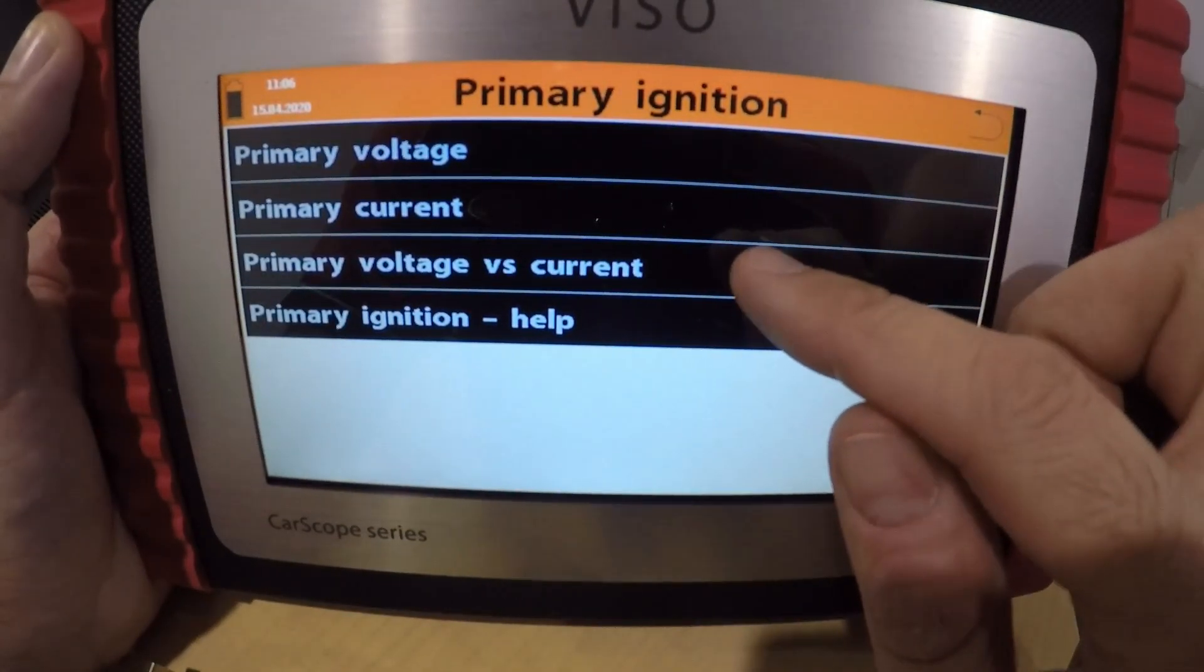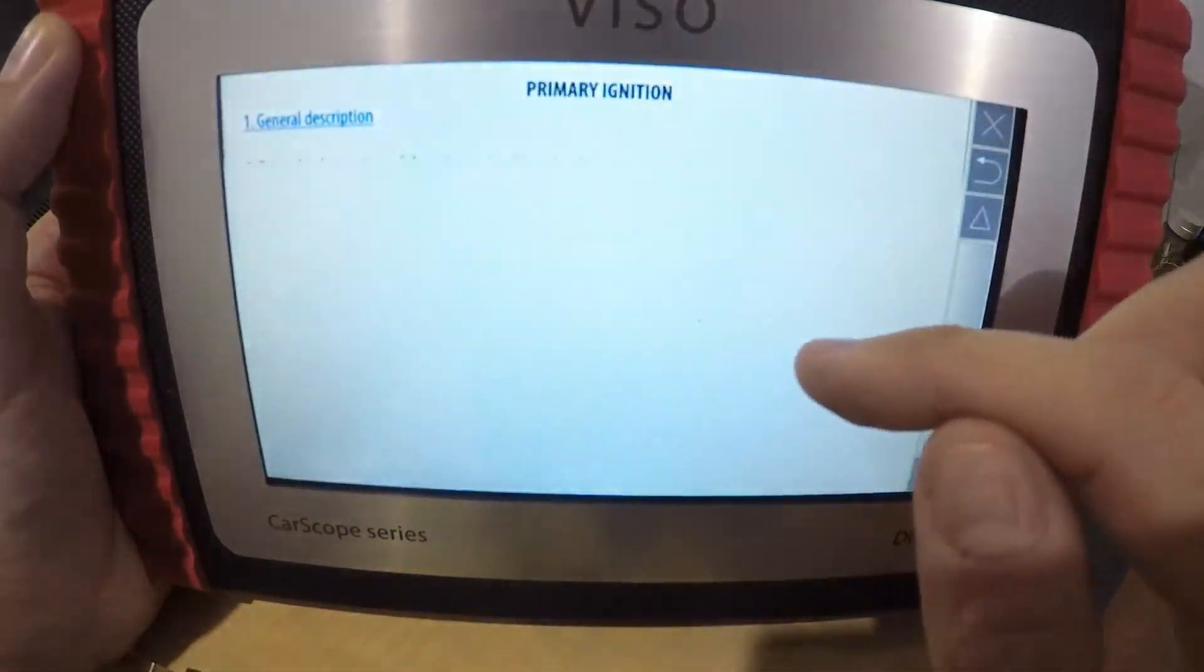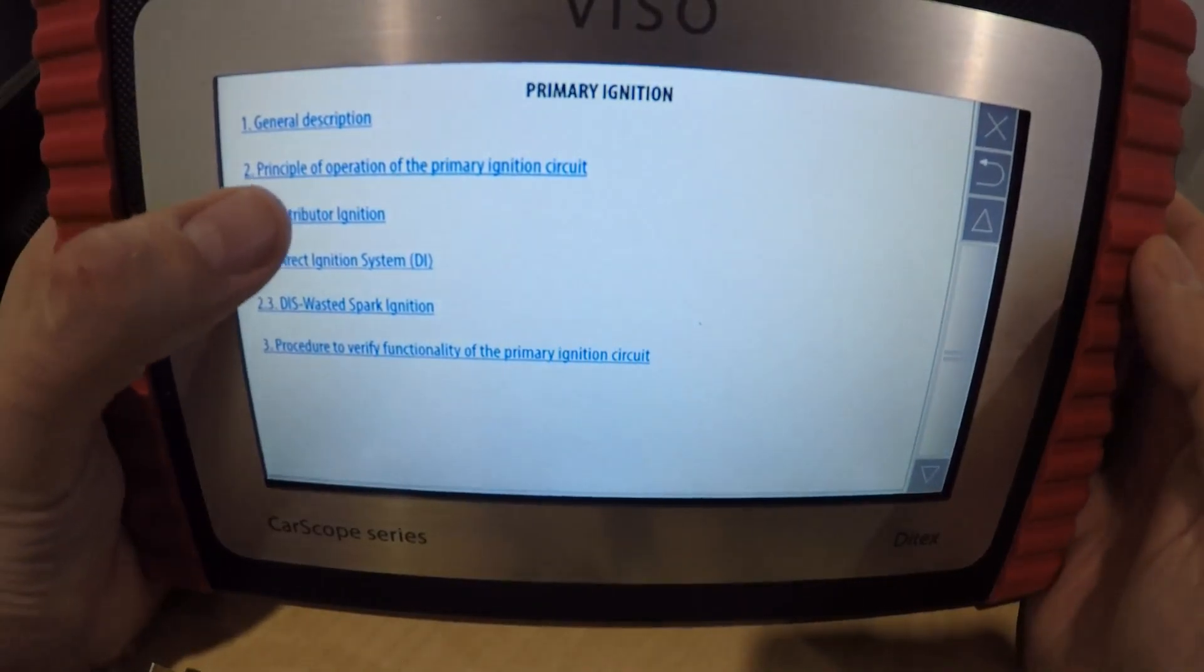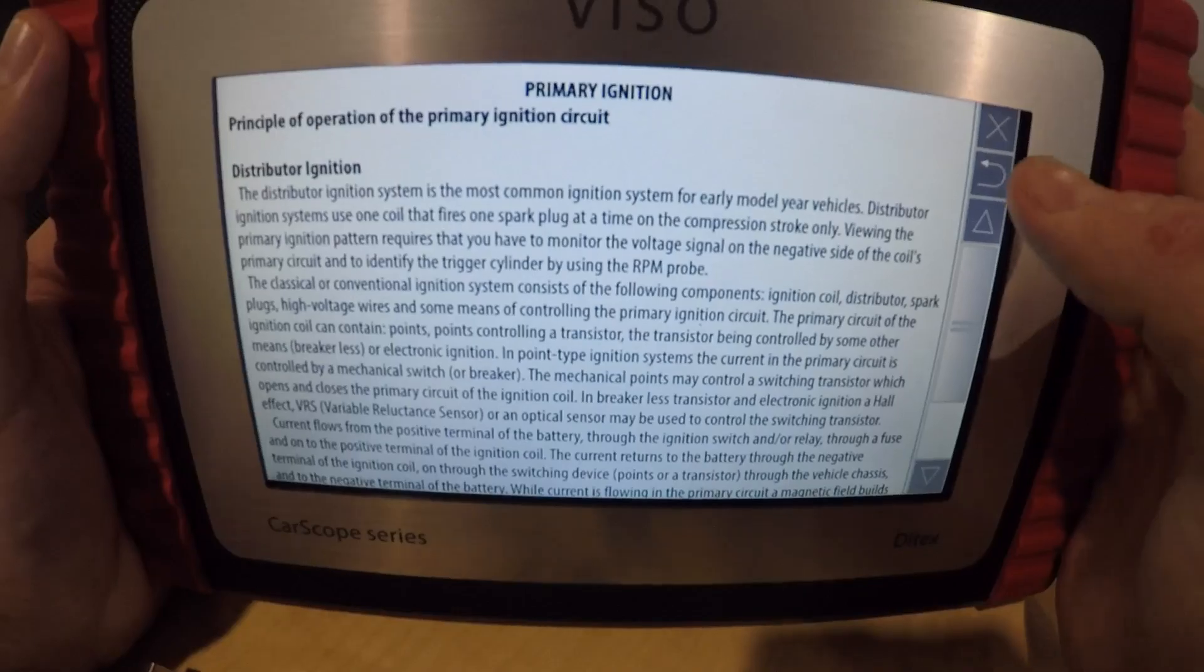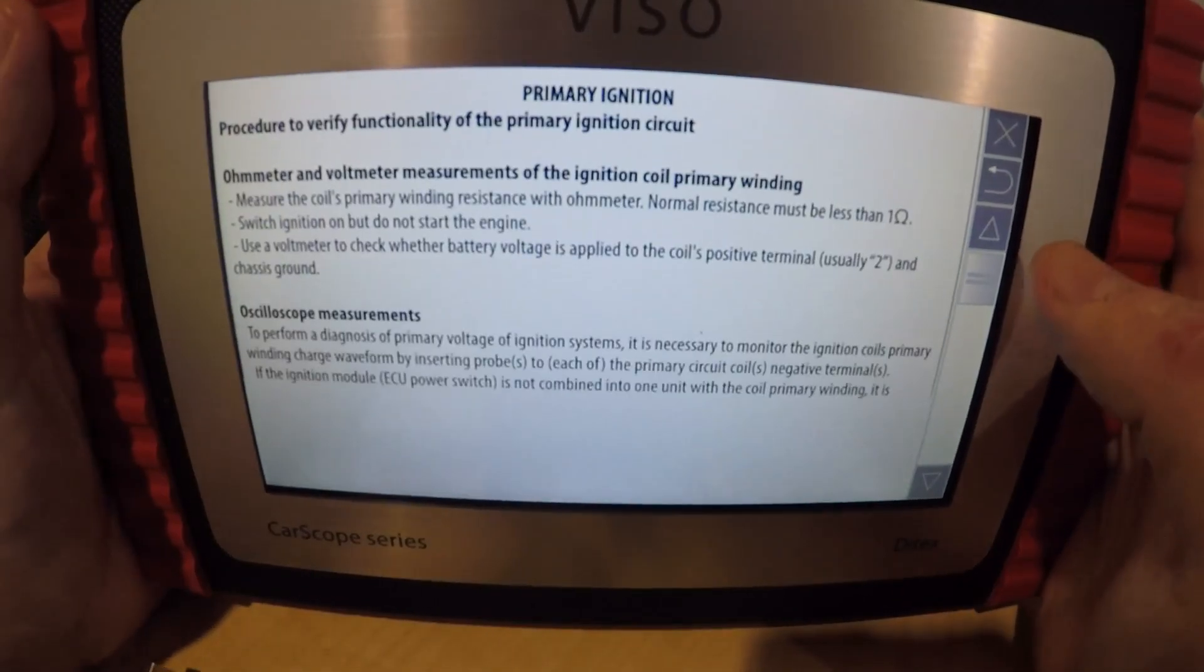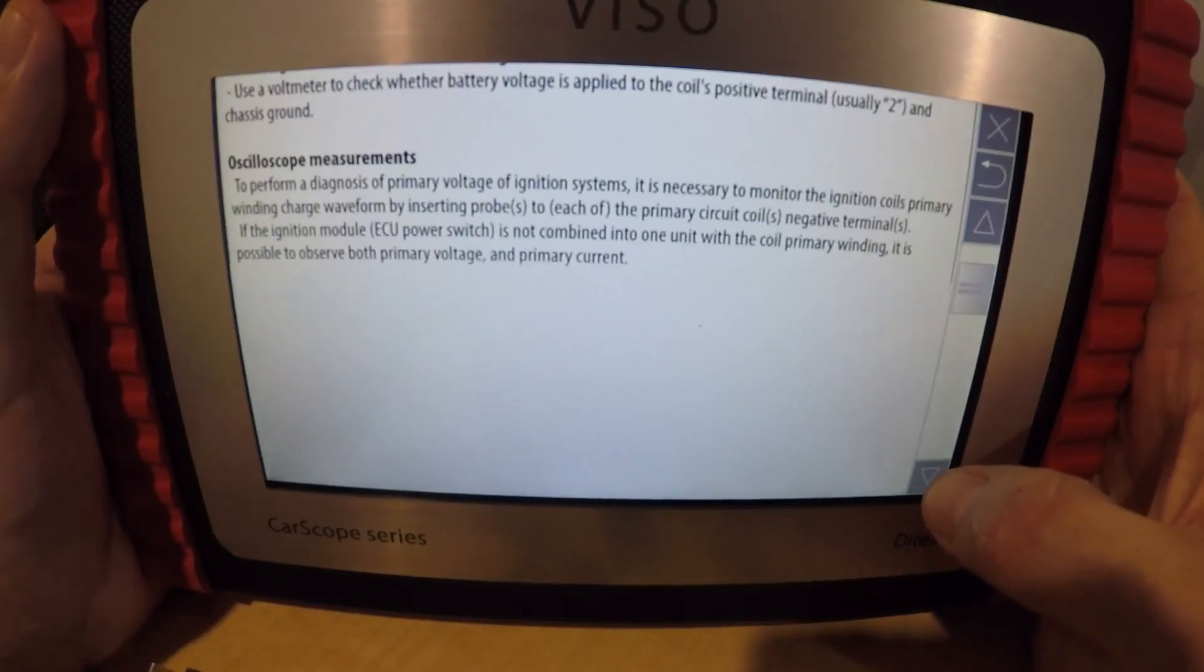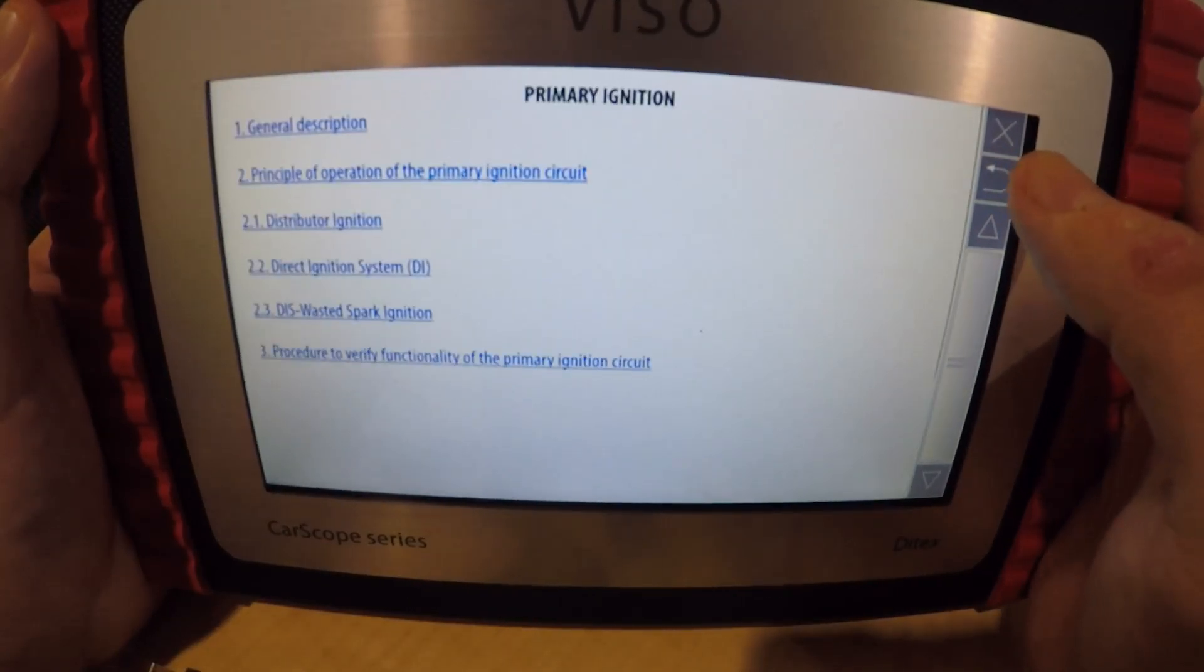Presets voltage versus current, ready to go with two channels. Primary ignition help. It explains the types of systems, procedure to verify. That's awesome, another example waveform.